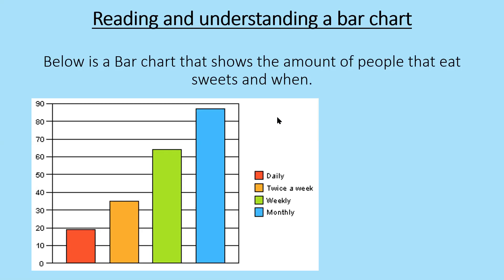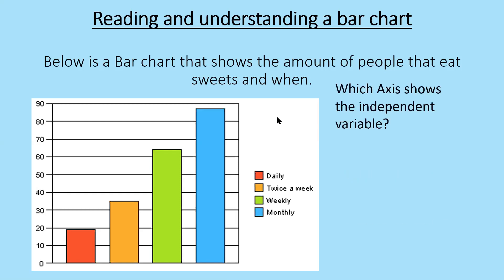Can anyone tell me what's missing from this bar chart? Labels would be a good start. Up the side should be the number of people, and along the bottom it should say how often people eat sweets. And of course, at the top, every chart should have a title. Now, three questions on this bar chart: firstly, which axis shows the independent variable?